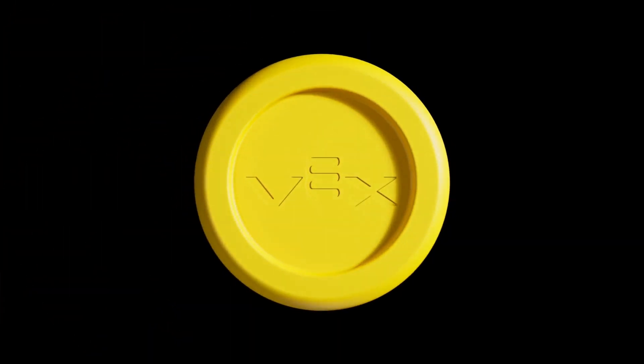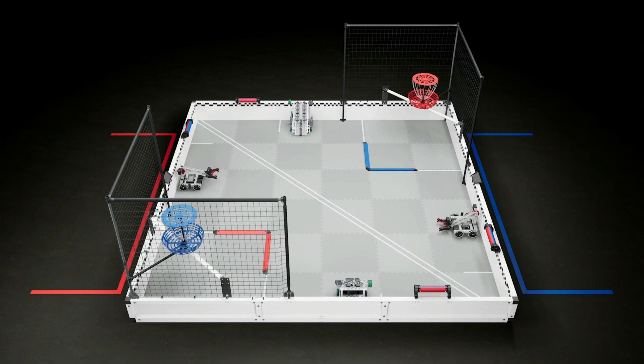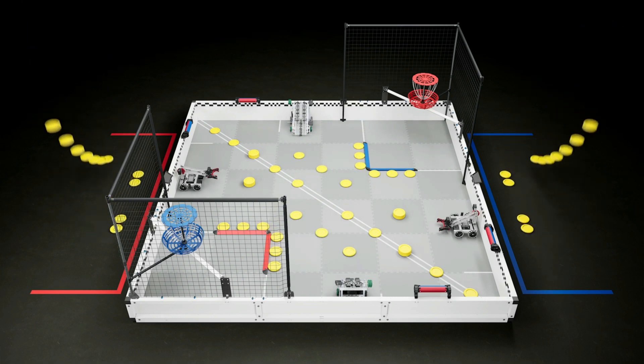The primary game objects in VRC Spin-Up are yellow foam discs. Discs are 140mm in diameter and 20mm thick. There are 60 discs total in a Spin-Up match: 38 that start on the field, 2 preloads per robot, and 7 match loads per alliance.